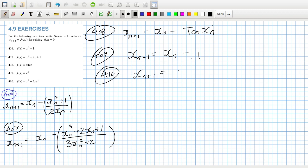xn plus 1 equals xn minus xn cubed plus 3xn e to the xn, and then over the derivative which is going to require the product rule, so that's 3xn squared plus 3 e to the xn plus 3xn e to the power xn.